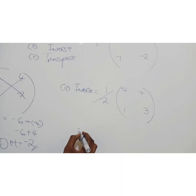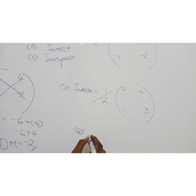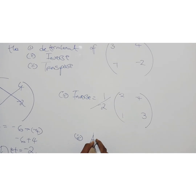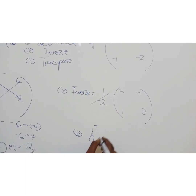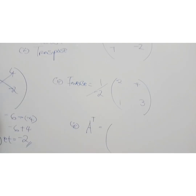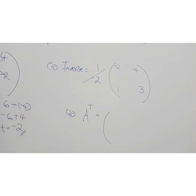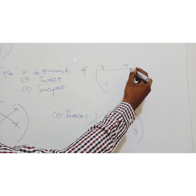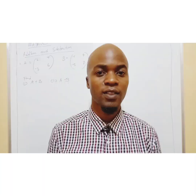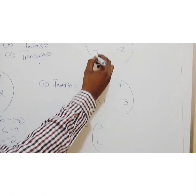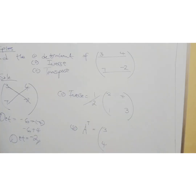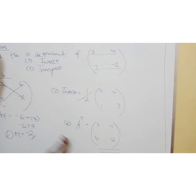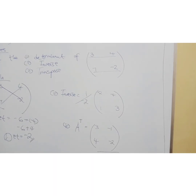Now transpose. Transpose is represented by an exponential T. Transpose means the rows become columns and columns become rows. For our matrix 3, 4, negative 1, negative 2: the first row 3, 4 becomes the first column, and the second row negative 1, negative 2 becomes the second column. Easy as that — pause it and meditate upon it.